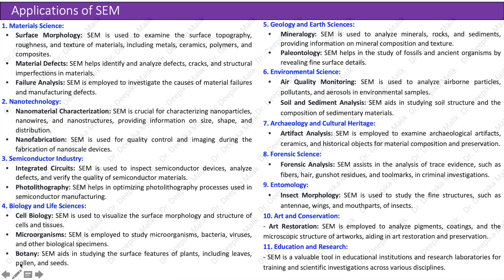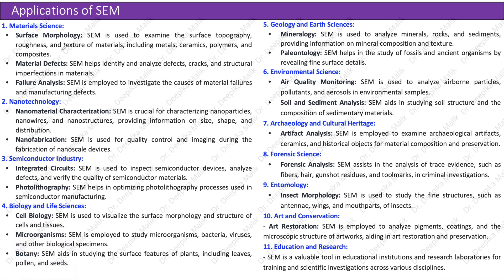Applications of SEM. In materials science: SEM is used to examine surface topography, roughness, and texture of materials including metals, ceramics, polymers, and composites. SEM helps identify and analyze defects, cracks, and structural imperfections in materials. It is also employed to investigate the causes of material failures and manufacturing defects through failure analysis.